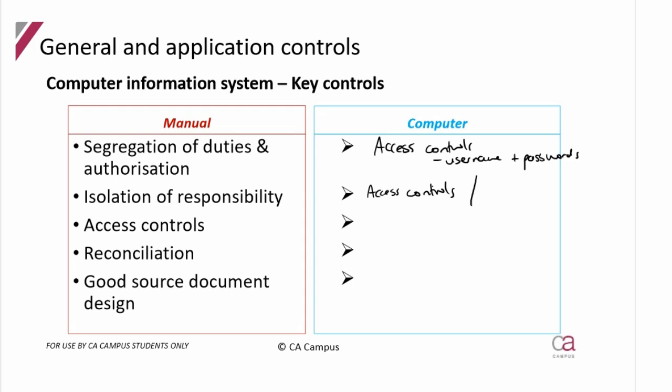Isolation of responsibility — if somebody has to sign taking responsibility for a control — can happen in a computer environment through access controls. In the output, logs will show if the person responsible for doing something actually did it or if somebody else did. For access controls themselves: in a manual environment they generally applied to unused source documents; in a computerized environment they apply to the entire information system. Physical access controls remain exactly the same in both environments.